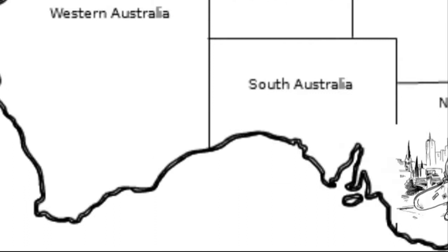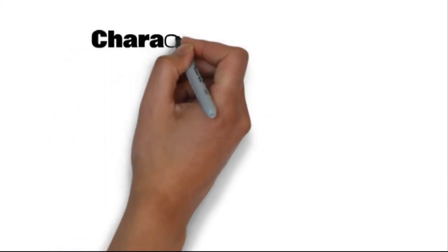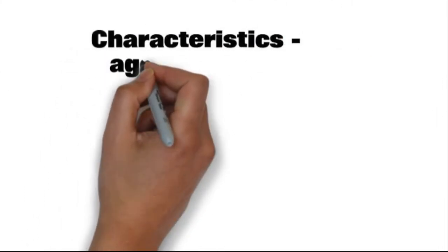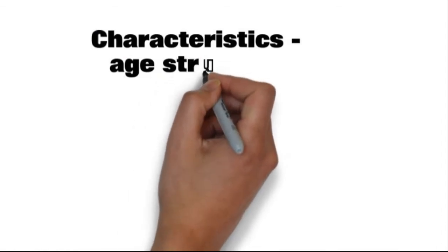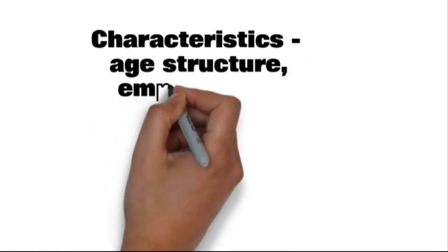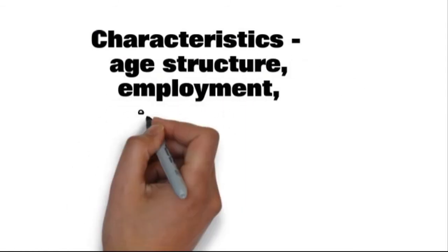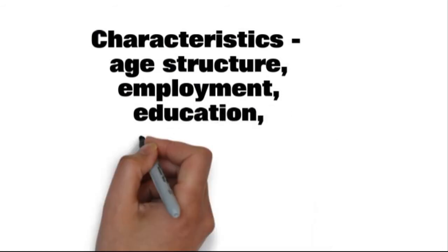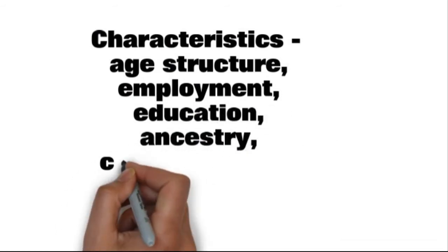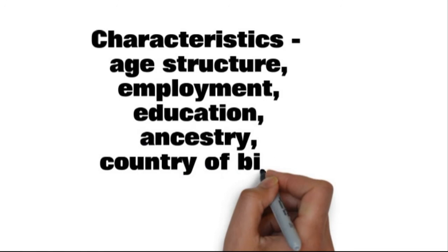With both the enumerated and usual resident census counts, Veronica can examine the characteristics of the population more closely: age structure, employment, household type and size, education, ancestry, country of birth, and much more.